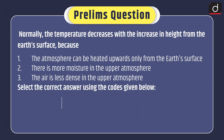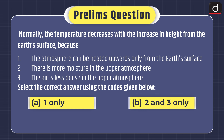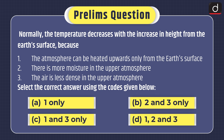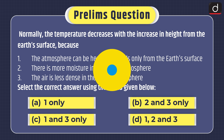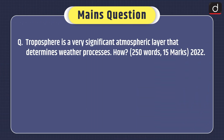Now it's time for practice questions. Prelims question: Normally the temperature decreases with the increase in height from the earth's surface because — 1. The atmosphere can be heated upwards only from the earth's surface. 2. There is more moisture in the upper atmosphere. 3. The air is less dense in the upper atmosphere. Select the correct answer: 1 only, 2 and 3 only, 1 and 3 only, or 1, 2 and 3. Mains question (asked in 2022): Troposphere is a very significant atmospheric layer that determines weather processes. How? That's all for today. Stay tuned for the next episode. Thanks for watching.